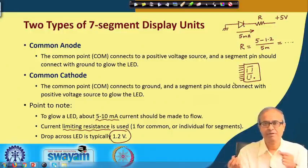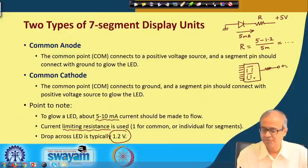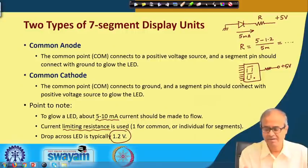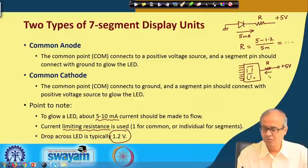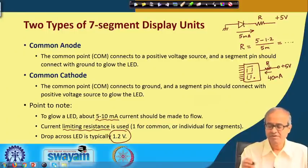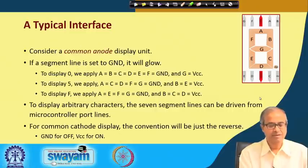For a 7-segment display with 8 LEDs inside, the best approach is to connect one resistance to each segment terminal, fixing the current at 5 mA each. Alternatively, for simplicity, a single resistance can be placed at the common terminal. For common anode connected to 5V, in the worst case when all 8 segments are glowing, you should allow 40 milliamperes of total current to flow, and choose the resistance accordingly.